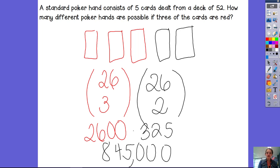So when I multiply those two I'll get 845,000 different hands of poker which would have three red cards and two black cards. That is pretty amazing to think about all the different combinations of cards.